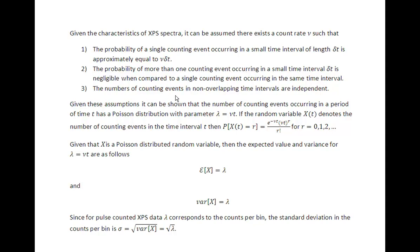The third condition: the number of counting events in overlapping time intervals are independent. When we measure a spectrum we expect to measure oxygen and get the count rate for oxygen, and then at a later time measure carbon and then any other elements in the sample.